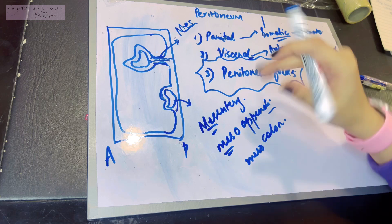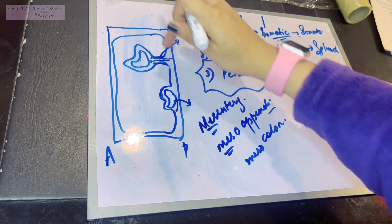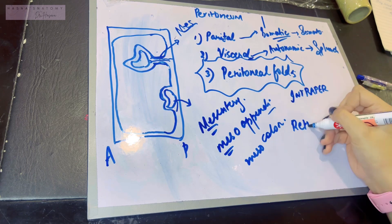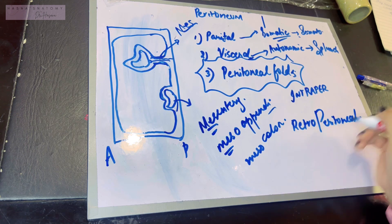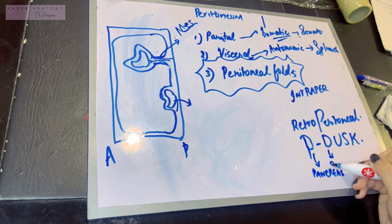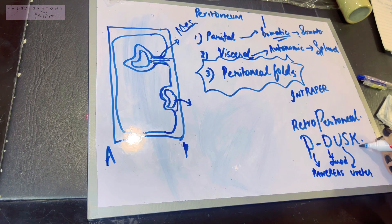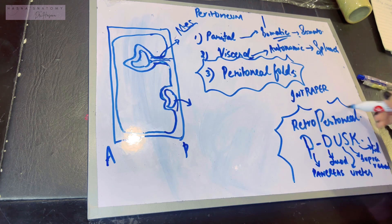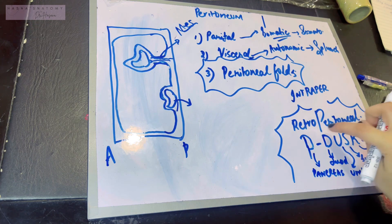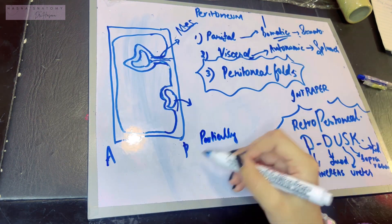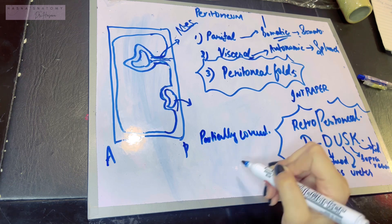The stomach is completely within the peritoneum. To remember all the retroperitoneal organs, use the mnemonic PDUSK: P is for the pancreas, D is for the duodenum, U is for the ureter, K is for the kidney, and S is for the suprarenal gland — the gland that lies above the kidney. These retroperitoneal structures do not have a mesentery and lie in close proximity to the posterior abdominal wall.